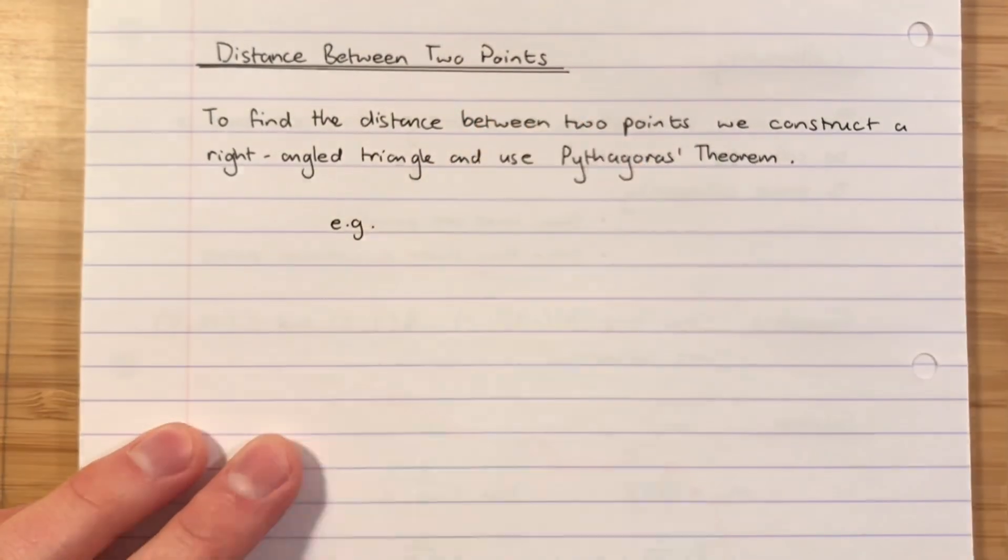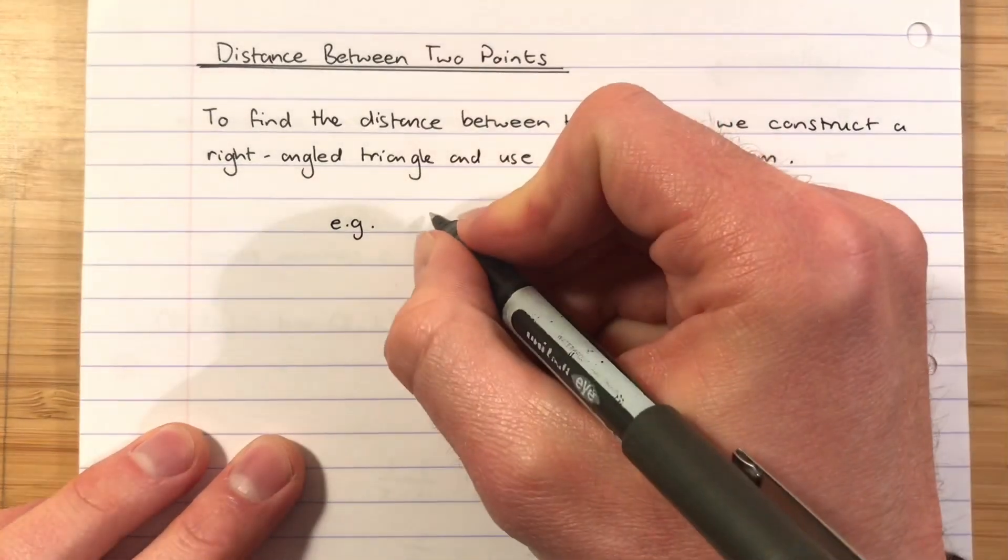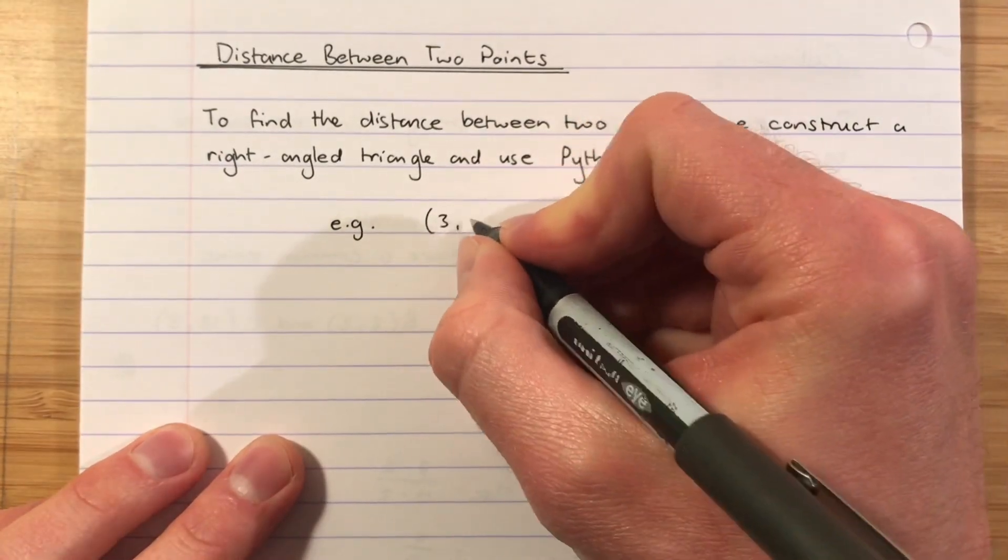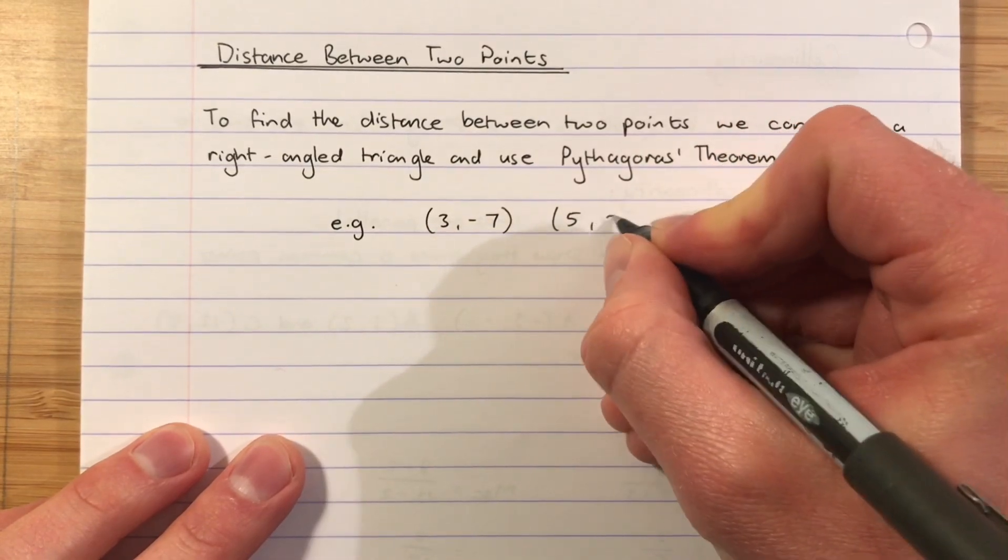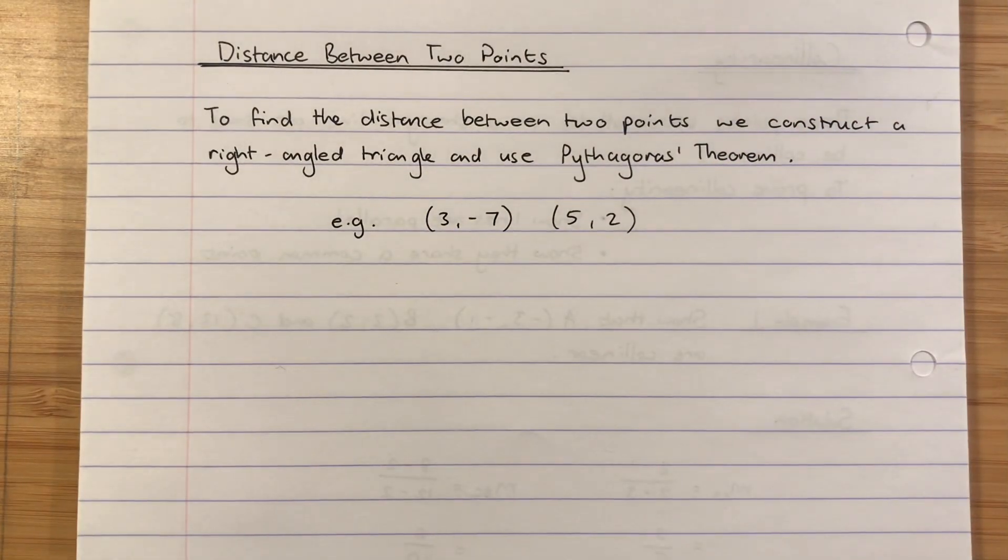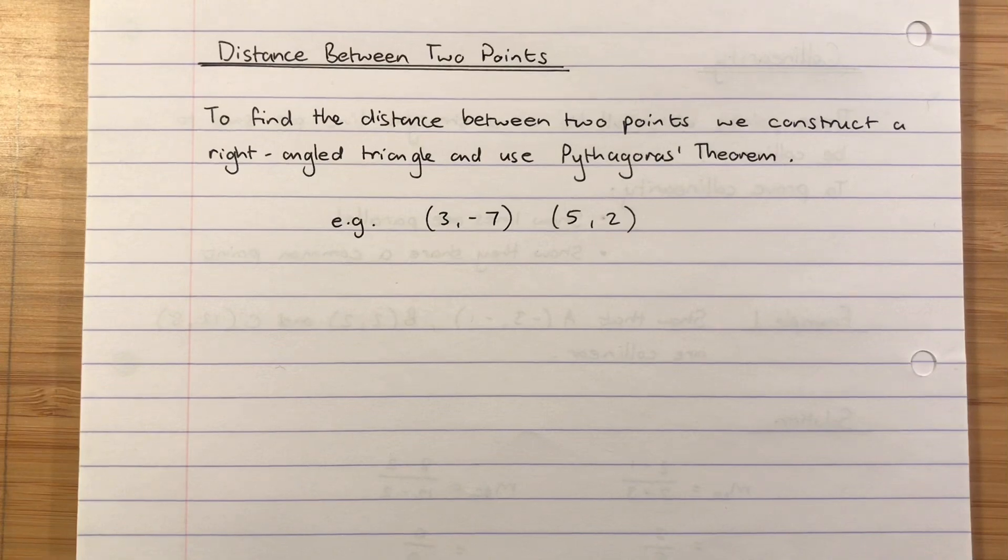Right, so we'll just do a wee example for this because it's quite fast. So let's say, for example, we're given the two points (3, -7) and (5, 2). Now in the example I mentioned before it worked out beautifully as 13 units. They don't always do that, and this one doesn't.